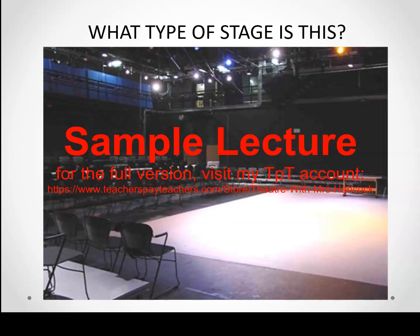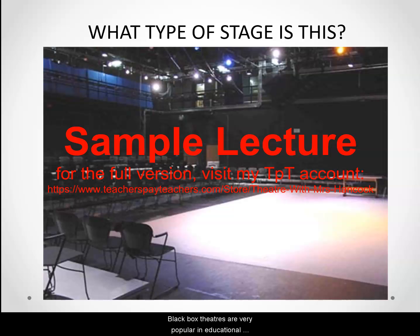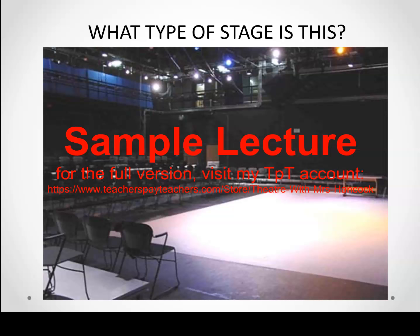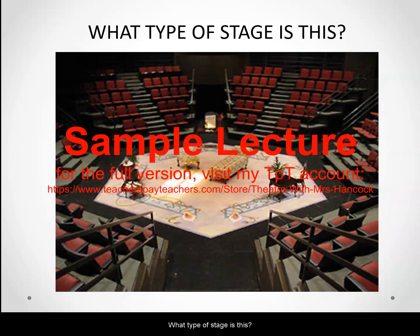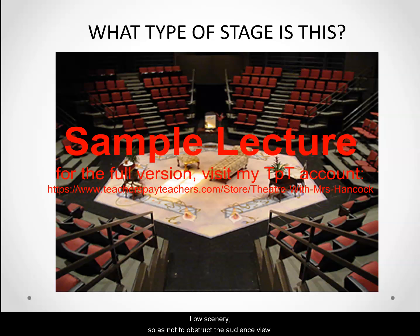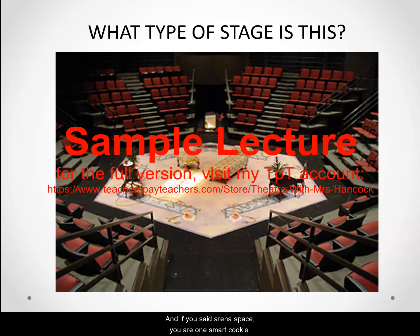What type of stage is this? Moveable seating, a large dark space — this is the black box theater. Black box theaters are very popular in educational settings because the students can be trained in a variety of types of spaces dependent upon how the seating is set up. What type of stage is this? Here we see seating on all sides, low scenery so as not to obstruct the audience view, and entrances through aisles that the audience may also use — and if you said arena space, you are one smart cookie.